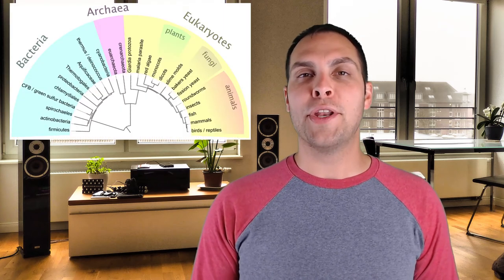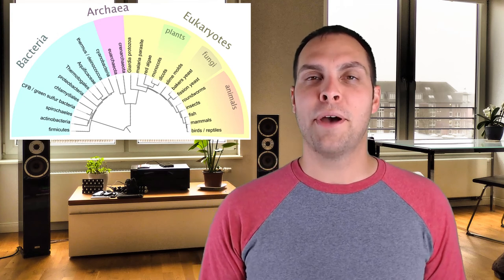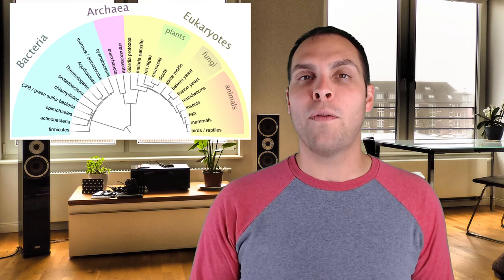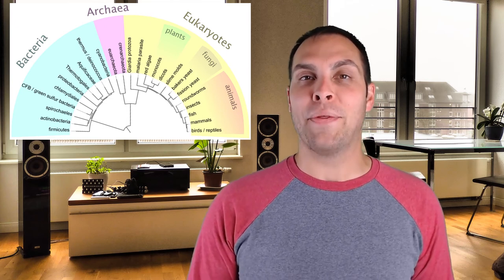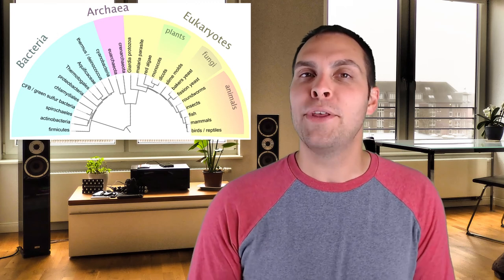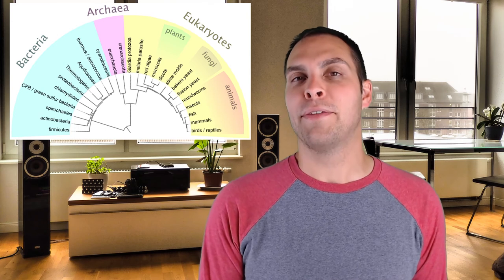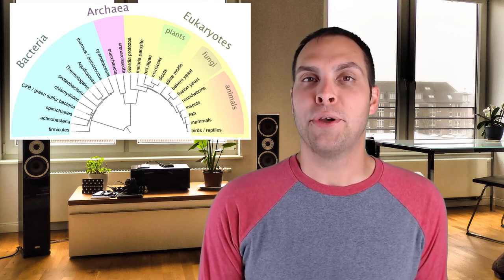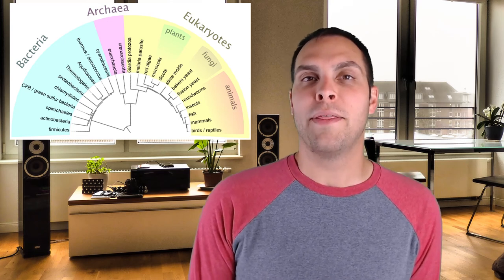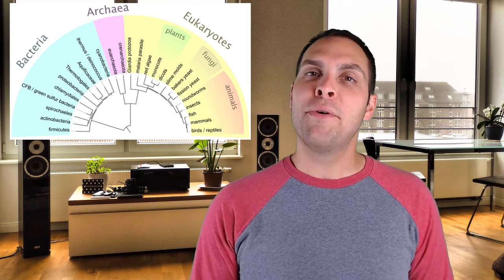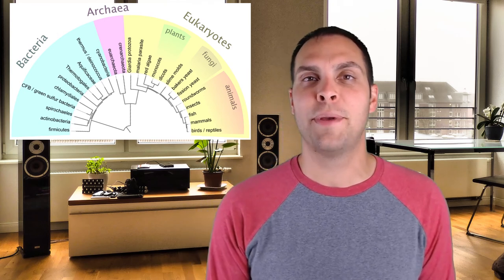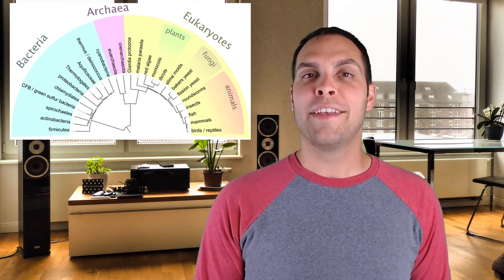Mutations can also help us track evolutionary relatedness between species. All species are related to each other through evolutionary divergence — if a species acquires enough mutations, they can diverge and become a new, separate species. That's how all of life has evolved over the last 3.8 billion years. Species that are more closely related from an evolutionary perspective have more similar genomes — they share more of the same genetic mutations than species that are less closely related.